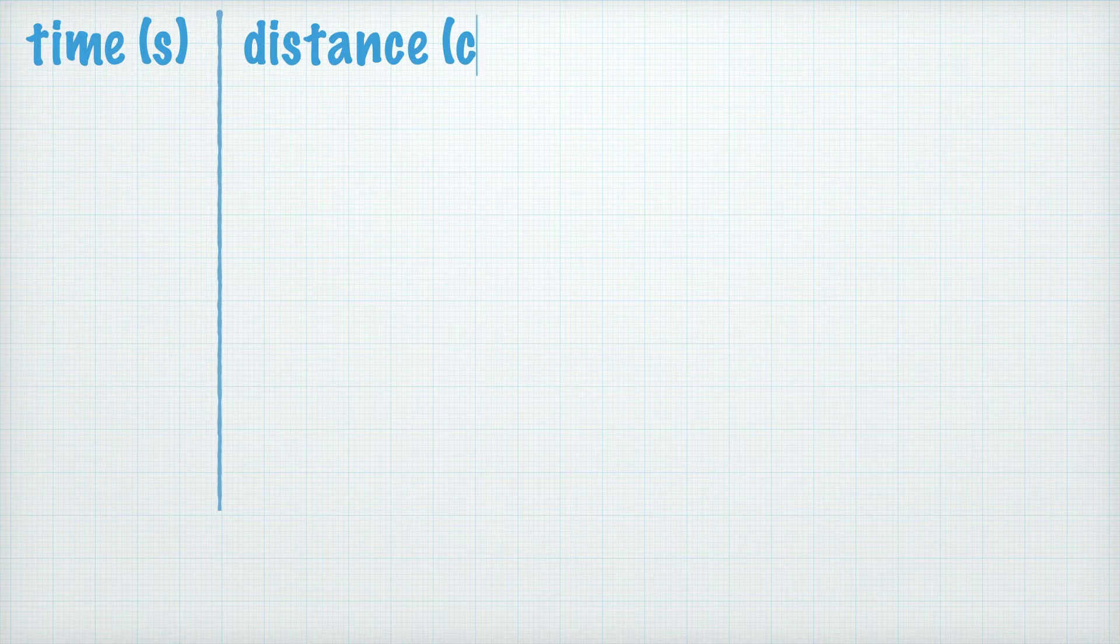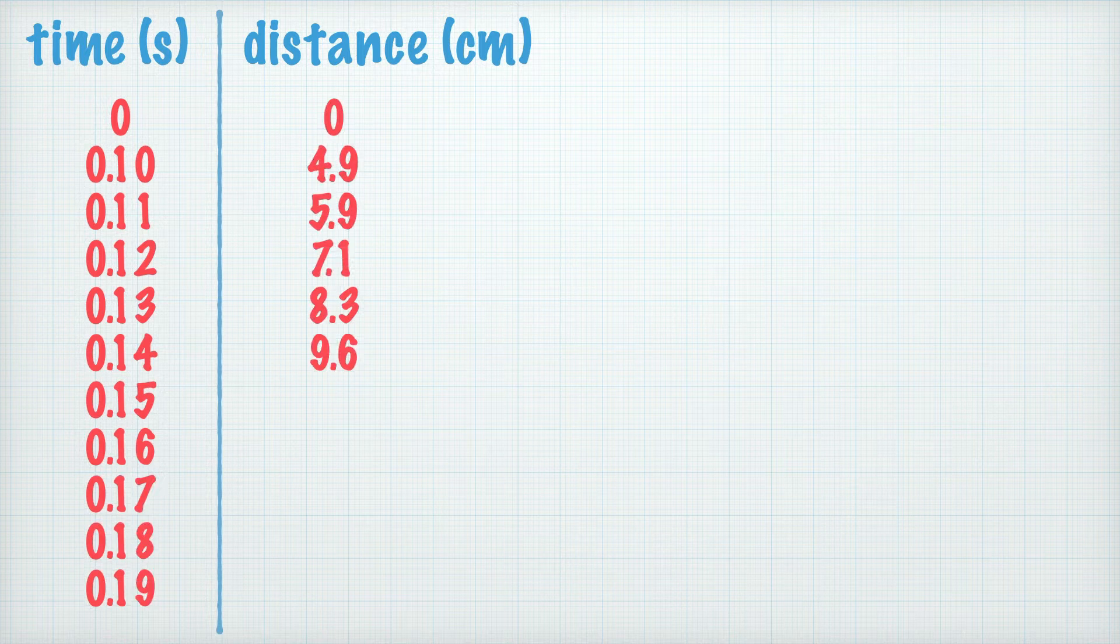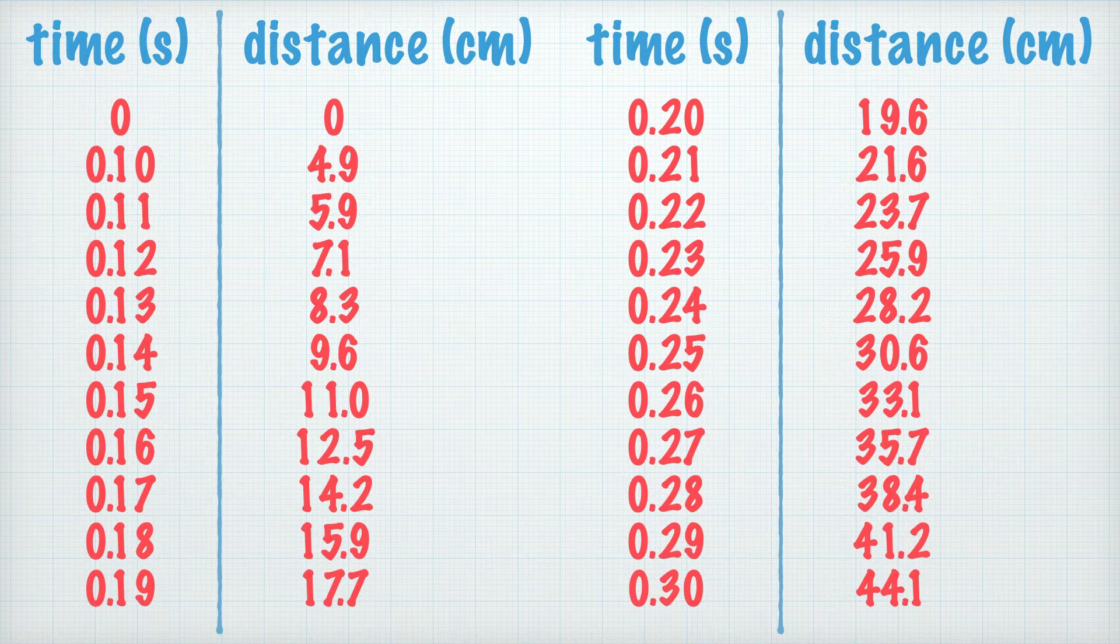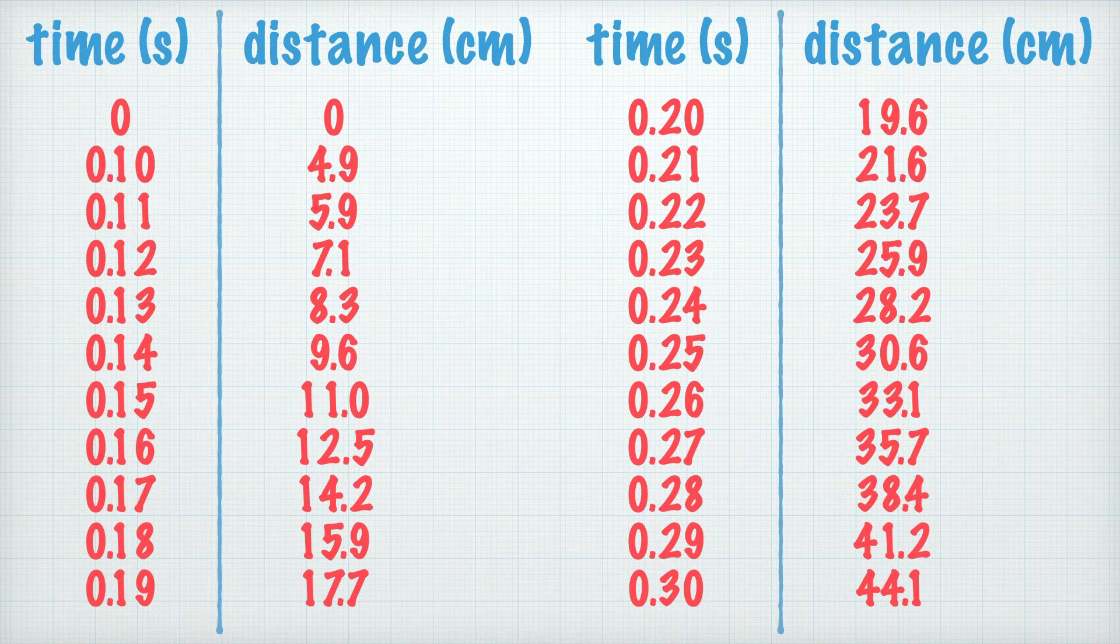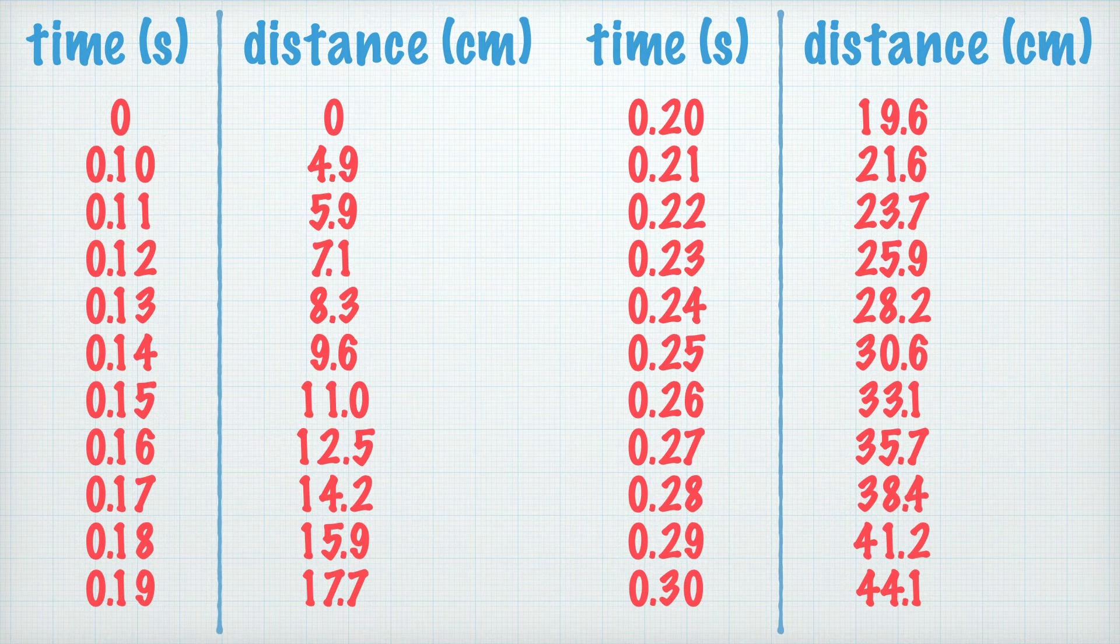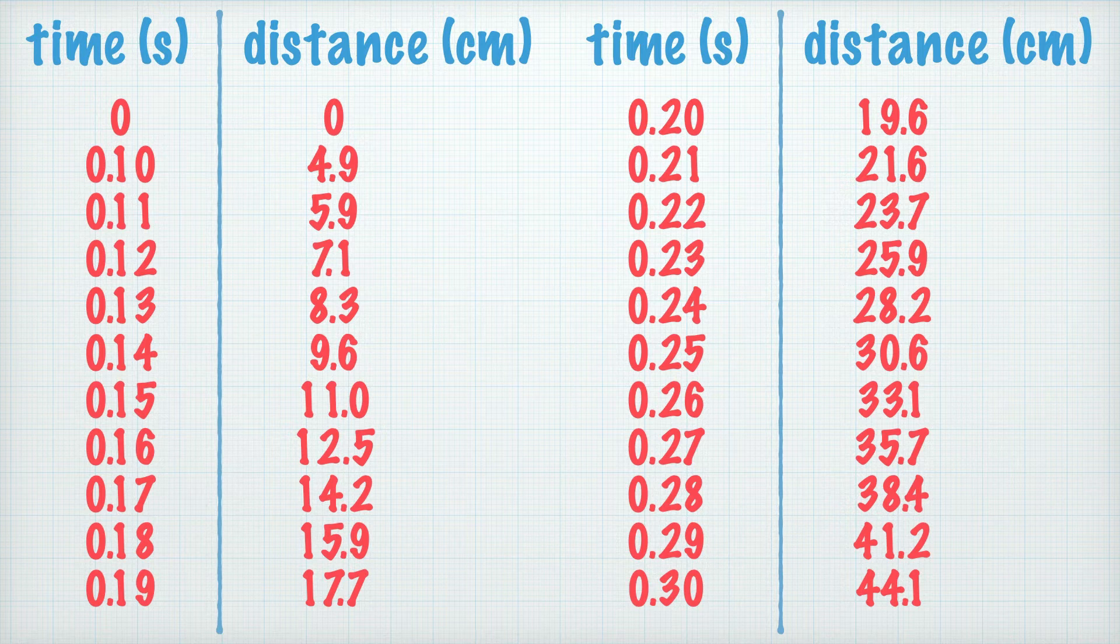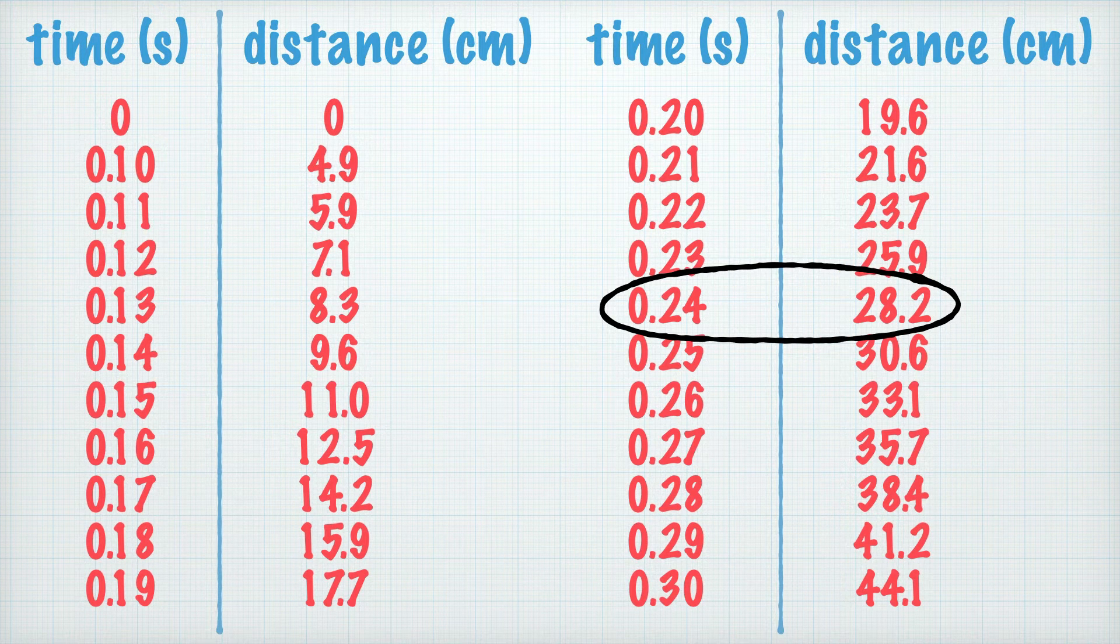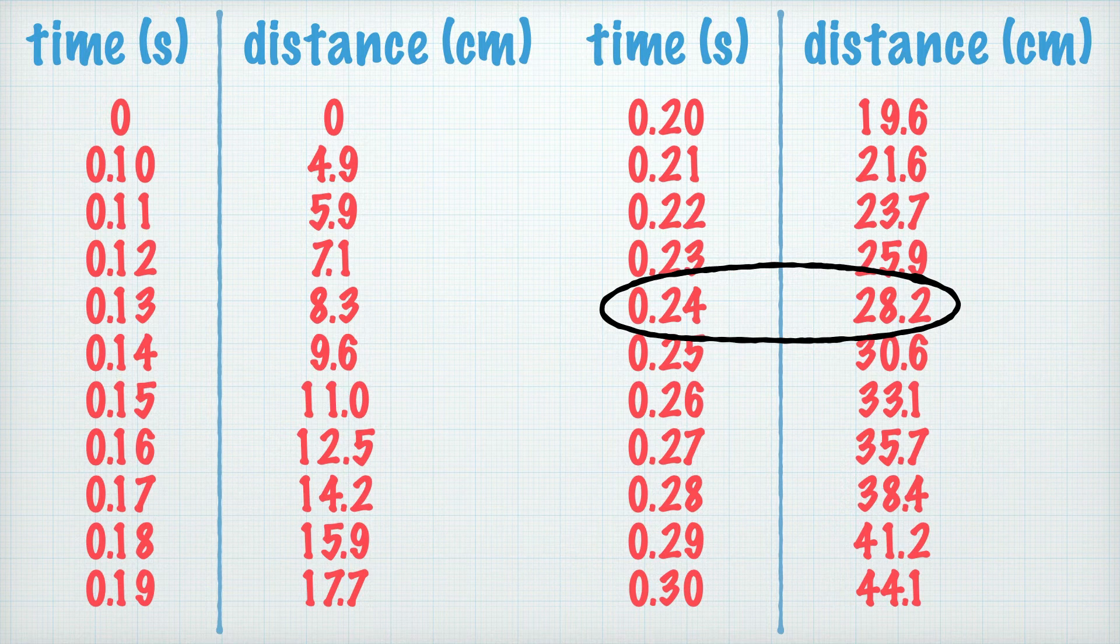So here are the values we get for reaction times of 0.1 seconds to 0.3 seconds. I should also say that the equation allows us to calculate distance falling in meters, and I've converted it to centimeters. As an example, if your reaction time is 0.24 seconds, then the rod will drop 28.2 centimeters before you catch it between your fingers.